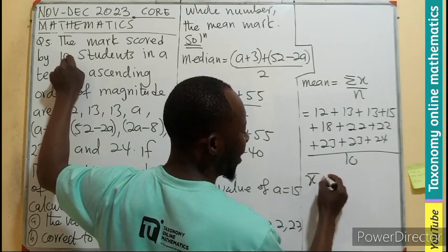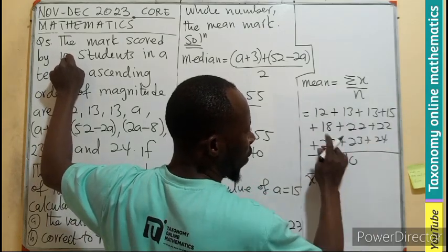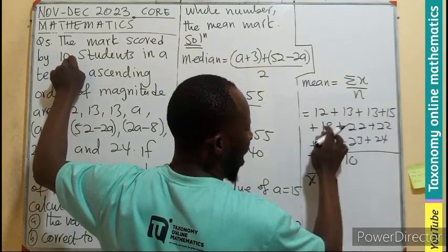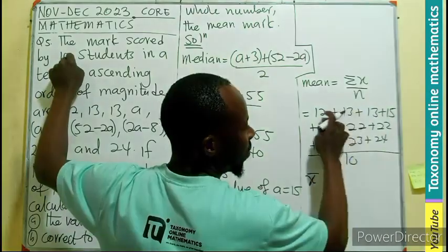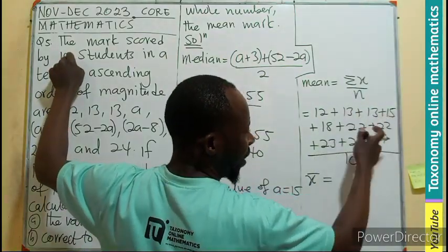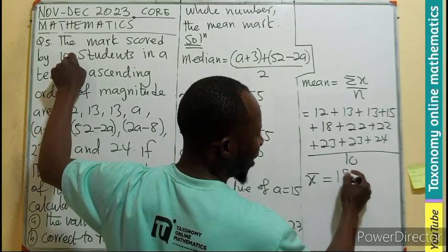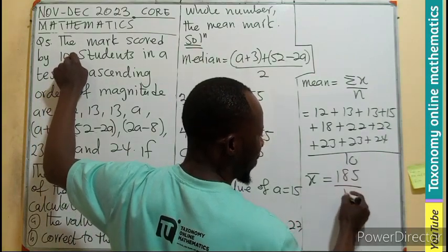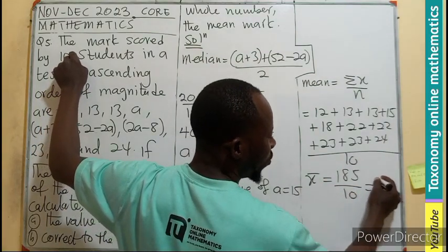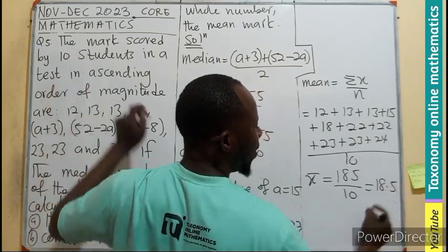So your mean is going to be, if you add all of these, that's 50, 55, 60. If you add all of them, you get 185 divided by 10, which is going to be 18.5.